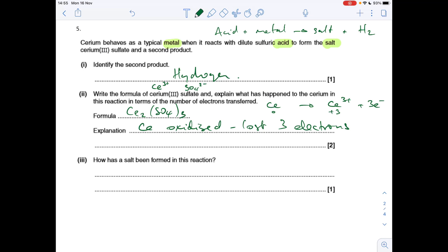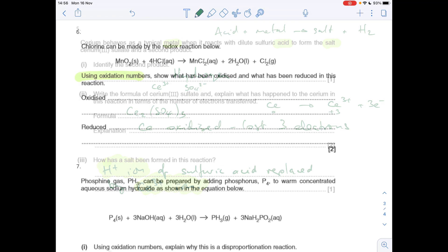The final part of the question is just testing our knowledge of the definition for salt. So we're told the salt is cerium(III) sulphate. It's been formed from sulfuric acid. So basically what happened is the H+ ion of the sulfuric acid has been replaced by that metal ion, that Ce3+ ion.